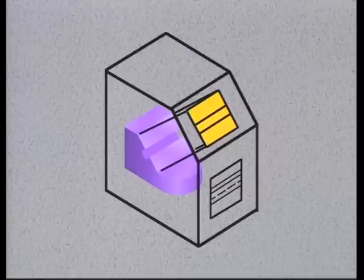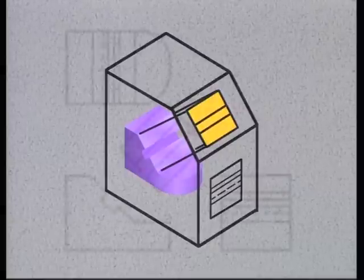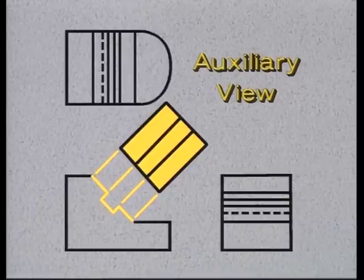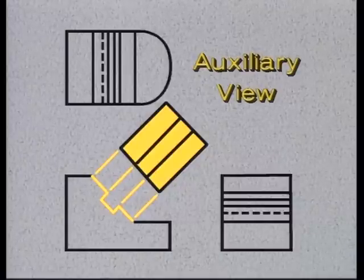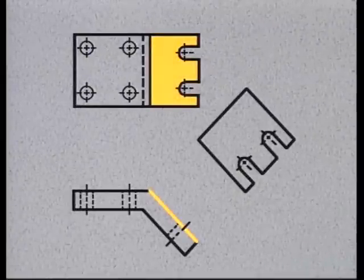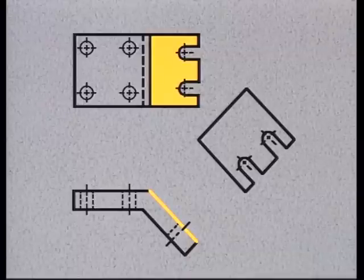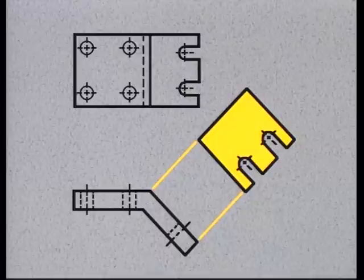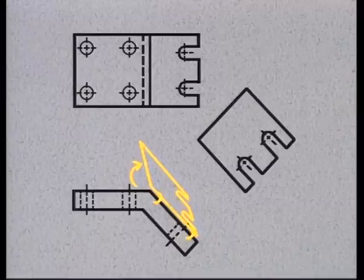Hidden lines and other details are usually omitted unless they're needed to improve clarity. On the drawing, the auxiliary view is projected from the inclined surface where it appears as a line — in this case, in the front view. To visualize its relationship to the front view, imagine that the inclined surface is hinged at this edge and can be lifted toward you. Here's another example: neither the front nor top view accurately represents the shape and size of the inclined surface. The auxiliary view, projected from the edge of the inclined surface in the front view, shows its true shape and size.